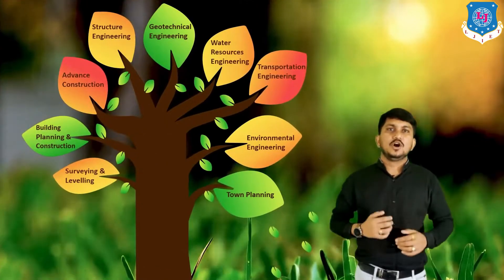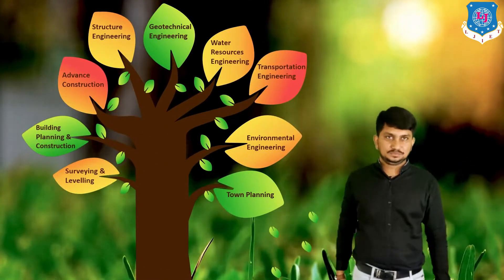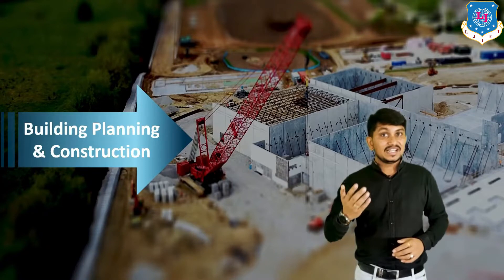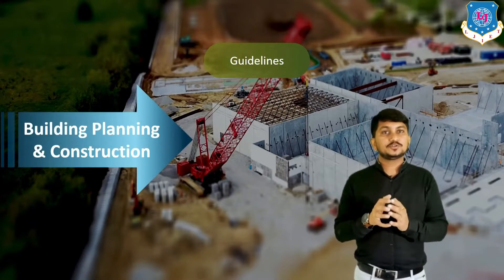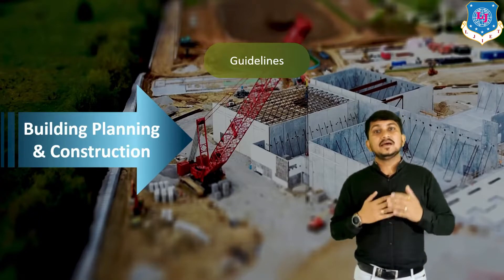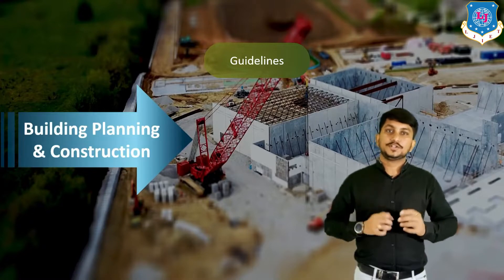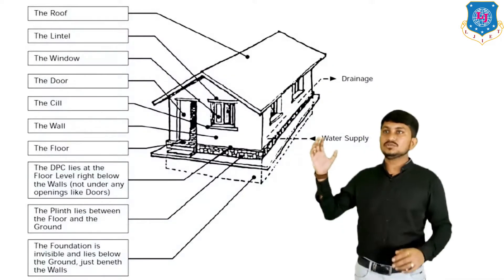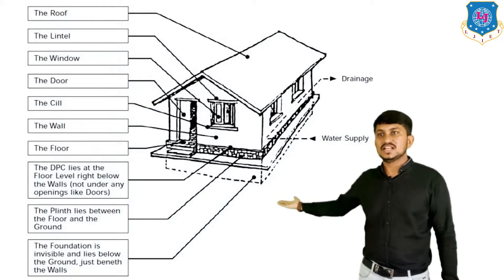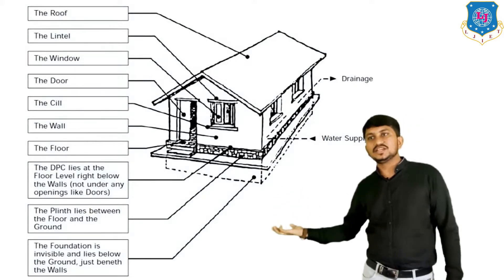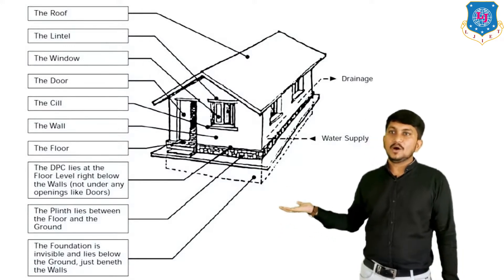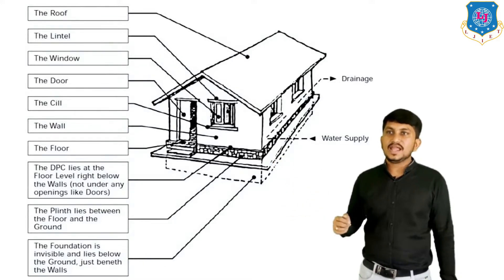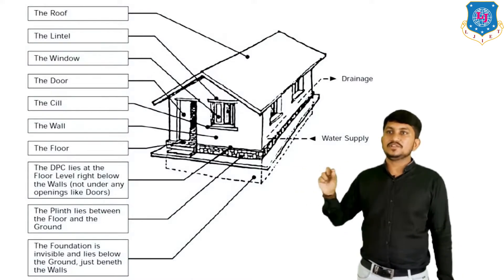Now let's discuss the second branch: building planning and construction. Before any construction, we must plan a building properly. Buildings are planned according to fundamental principles of building planning and various building bylaws of local municipal authorities. The main components of a building include: the foundation, which is invisible and lies below the ground; above the foundation is the plinth layer, which is between the floor and the ground; and above the plinth is a small layer called the damp proof course.